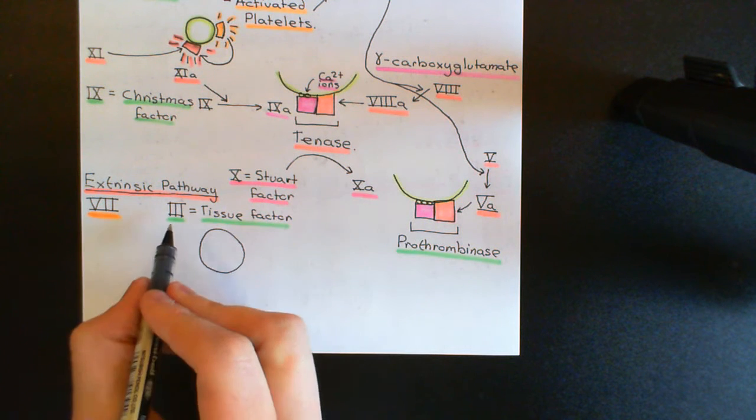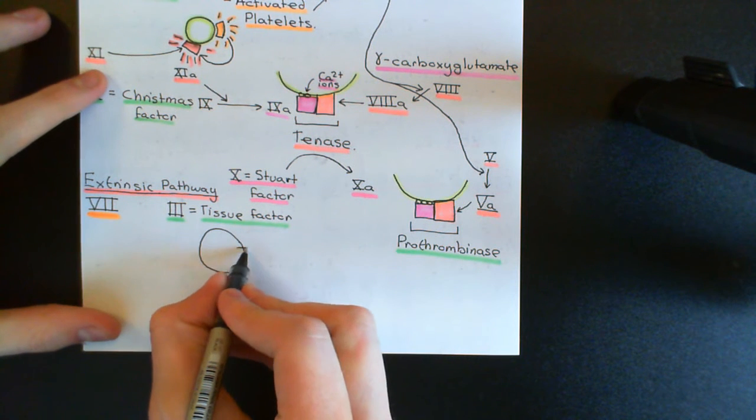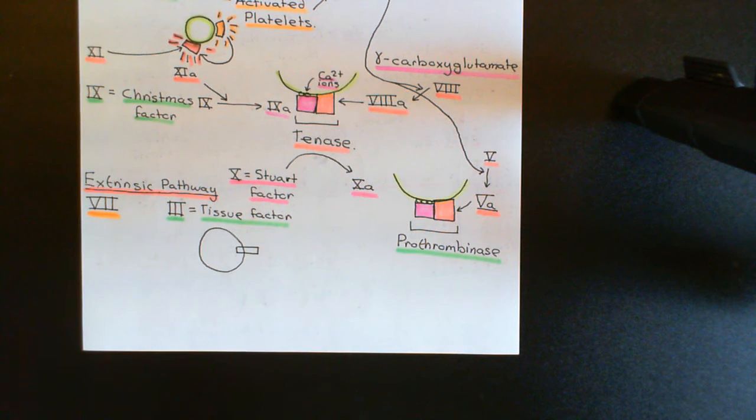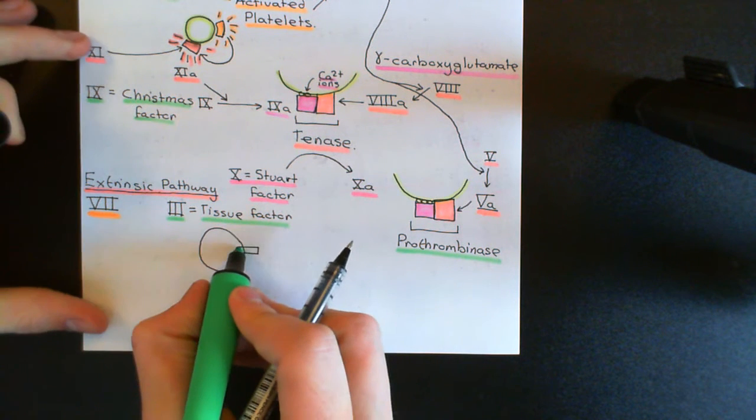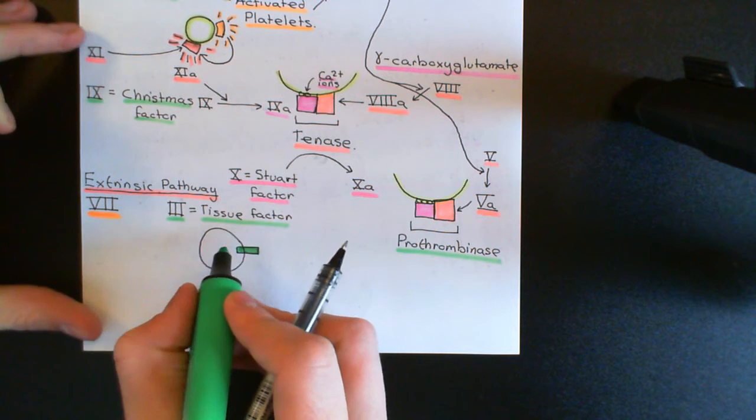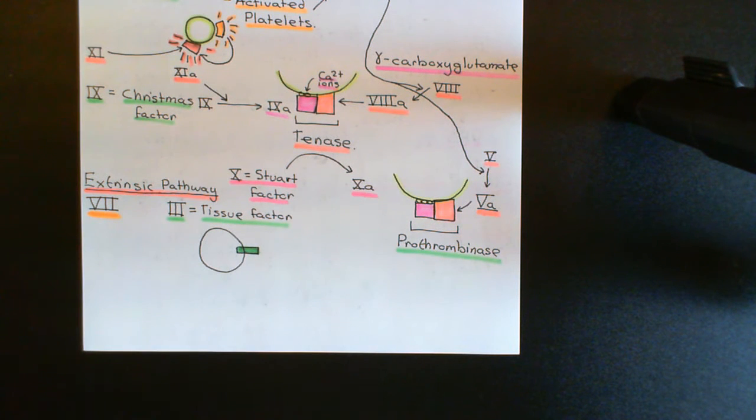The other strange thing about tissue factor is that it doesn't have an inactive and an active state. So it's a strange coagulation factor, different from all of the other ones. It's just coagulation factor 3, there's not 3A. So cells that are outside of the circulatory system, these will have on their surface lots and lots of tissue factor molecules. This is a picture here of tissue factor.